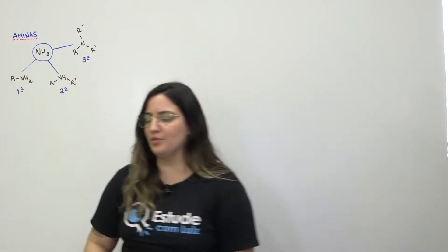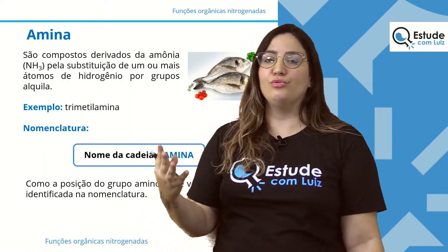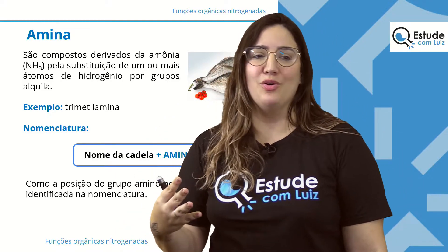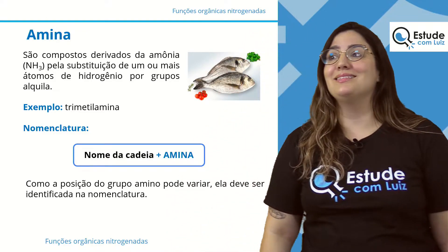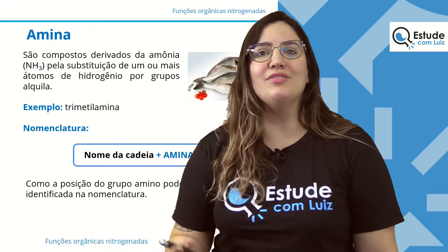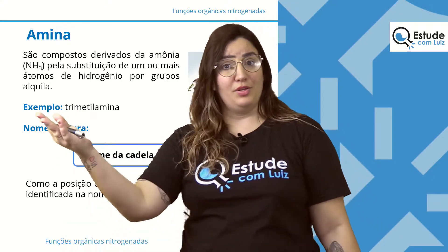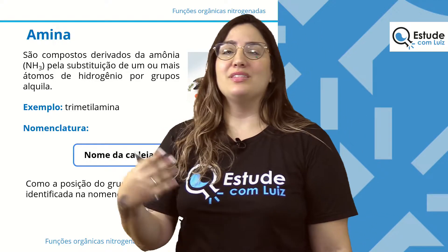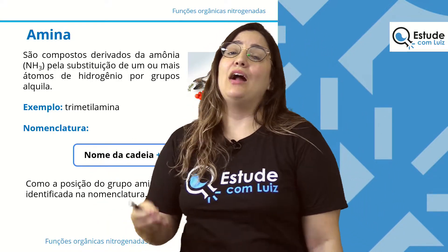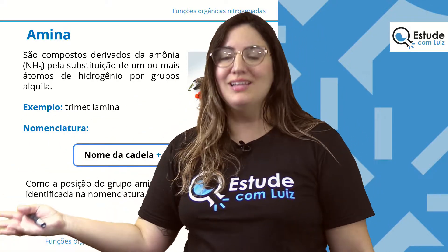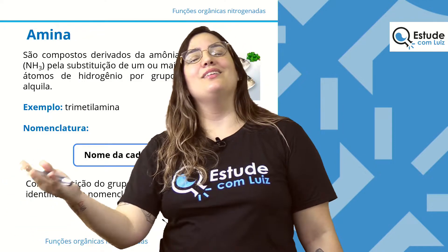Como exemplo, temos a trimetilamina, que é a amina que dá o famoso cheiro de peixe — aquele cheiro que gruda na mão e deixa a cozinha toda perfumada. Como as aminas são básicas, você pode usar um ácido para neutralizar esse cheiro, como vinagre ou limão. Só não passe limão na mão para tirar o cheiro de peixe e vá ao sol sem lavar as mãos, porque senão você vai se queimar.